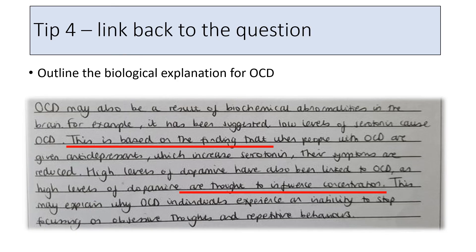Another key thing for AO1 questions is to always link back to the question. If the question is about outlining the biological explanation for OCD, ensure you are always linking back to OCD as much as you can. Looking at this paragraph about biochemical abnormalities — they've talked about low levels of serotonin and high levels of dopamine. For me as a teacher, those points are a little bit basic. A far better answer would explain how we know serotonin is involved in OCD. The underlined section shows it's not just saying low levels of serotonin, but linking back to OCD in more detail: this is based on the finding that when people with OCD are given antidepressants which increase their serotonin levels, their symptoms are reduced.